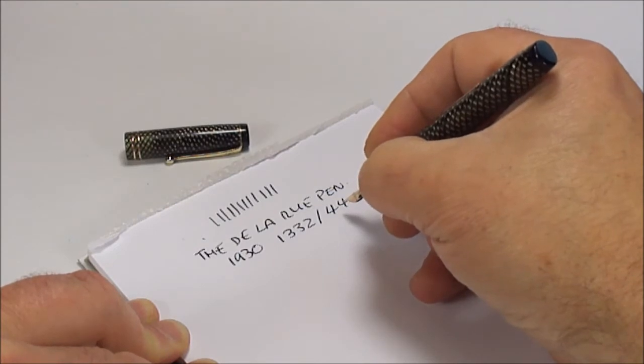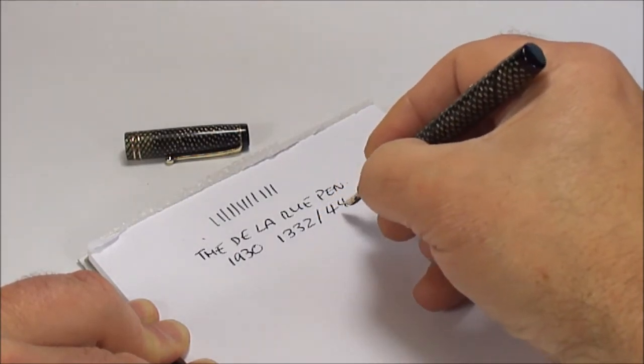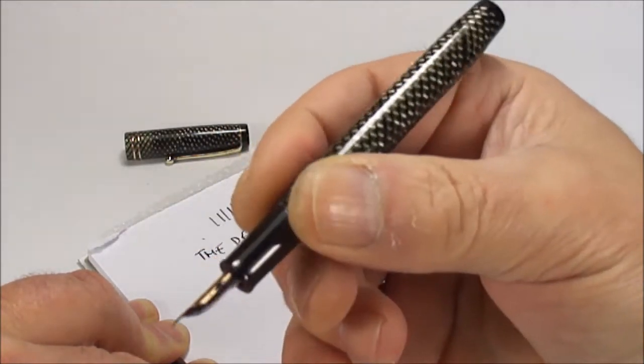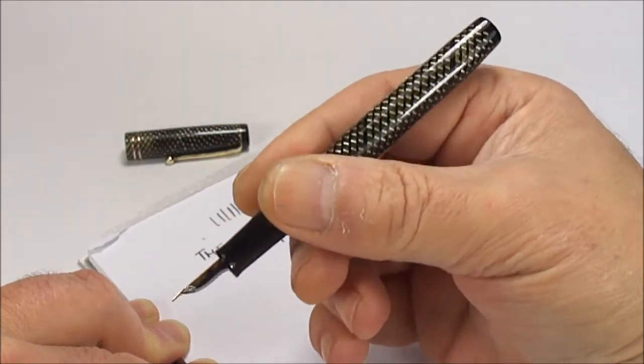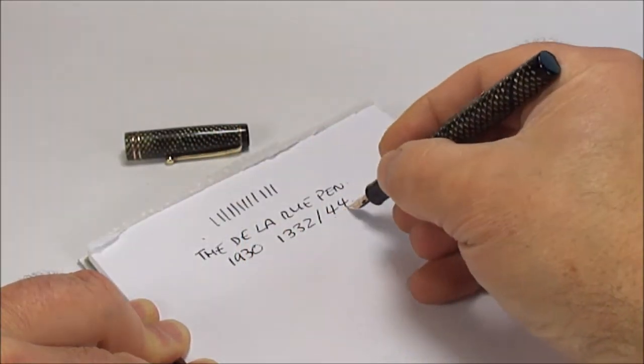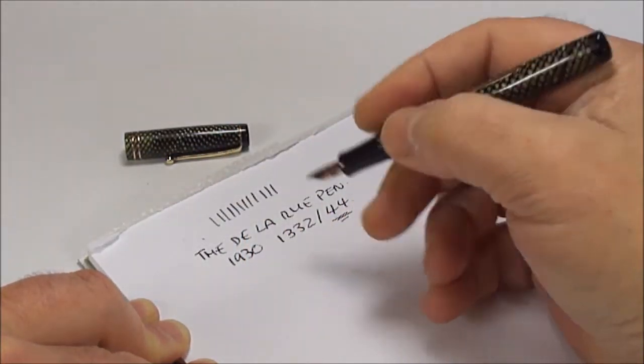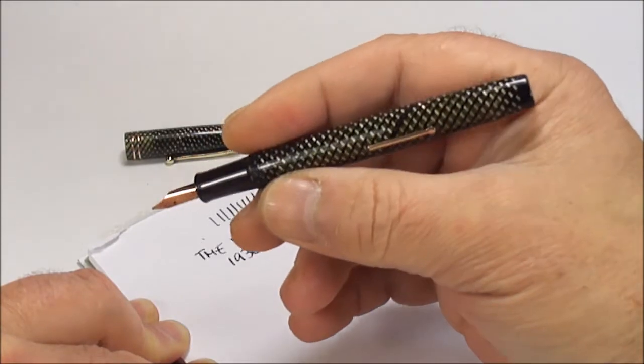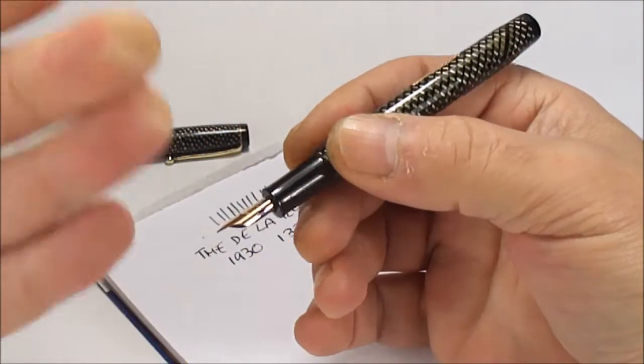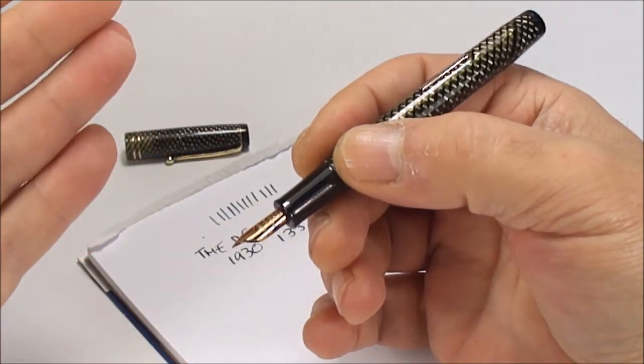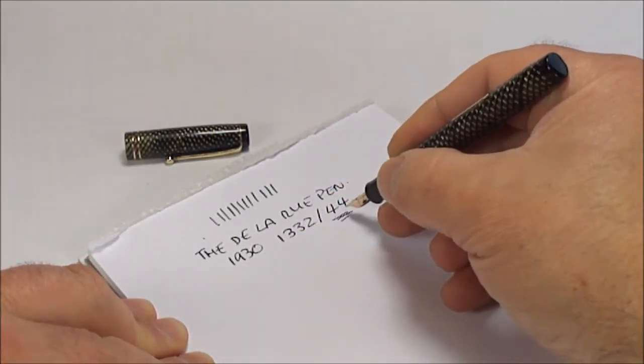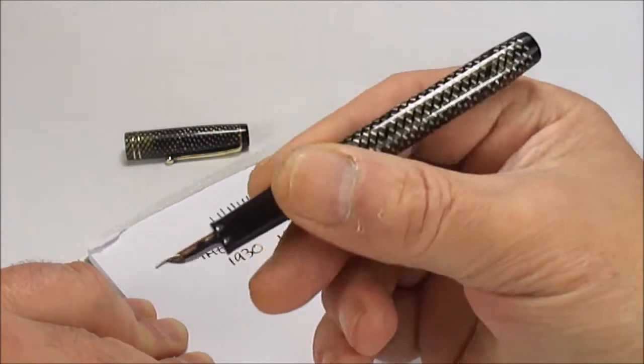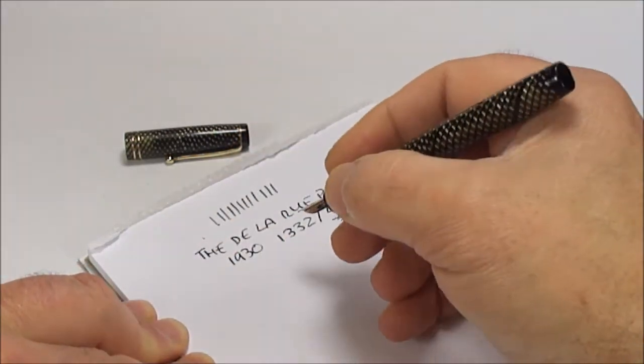Incidentally, the 44 I believe stands for this material, this mesh material, because as you'll see in the other one, the second two digits is slightly different and that indicates a different color or in that particular instance, a hard rubber. So the model of the pen is the 1332, the 44 is the material or the pattern of the pen.